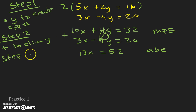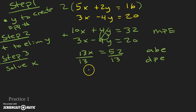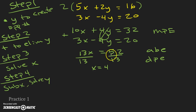Now step 3: once we add to eliminate one of the variables, we solve for the remaining variable — in this case x. We start by dividing by 13. Dividing both sides, we cite the DPE property, and we're left with x equals 4. Once we find x, our last step is to figure out what y is. We're going to substitute x and solve for y. I prefer that you use the original equation before you multiplied — this will make sure you got the right answer.